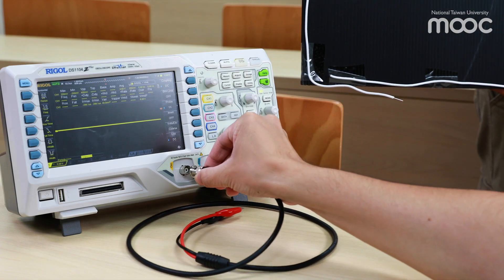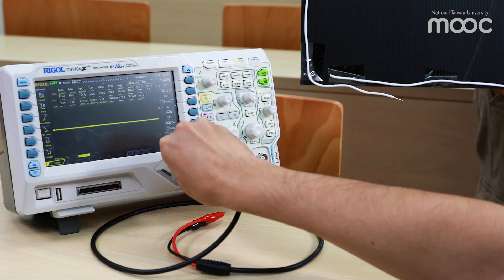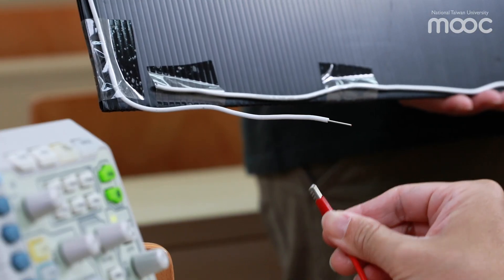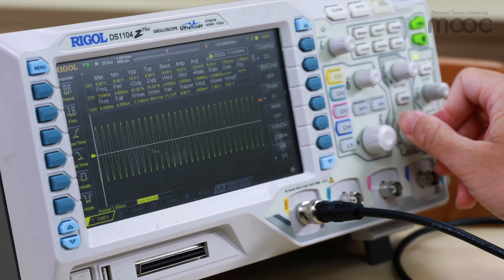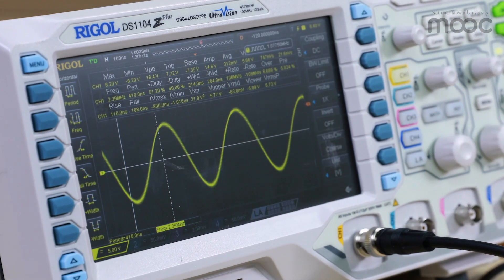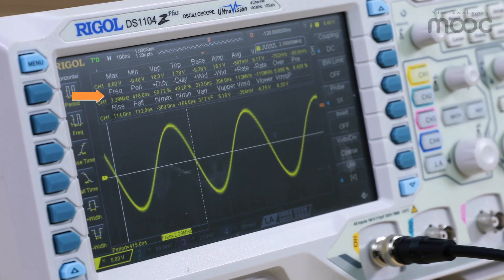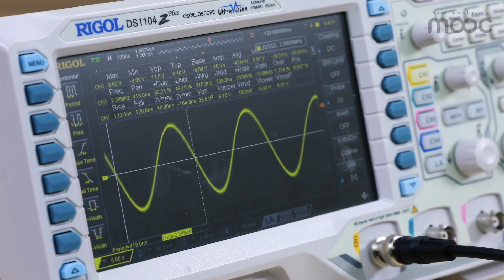Now, we connect the terminal of the loop to the oscilloscope. We can observe an oscillating waveform with a frequency of around 2.4 MHz, which is the resonant frequency of the Tesla coil.